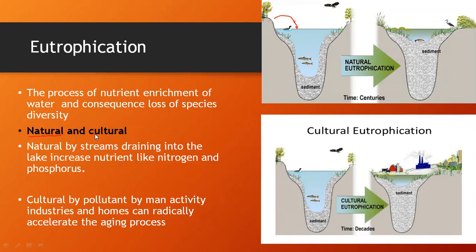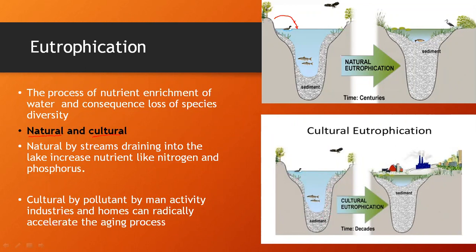Whereas in cultural eutrophication — remember this — the pollutant from human activity, industries, and homes radically accelerates the aging process. Imagine this pond is near your house. For a very long time this pond is there — from a young age you've been seeing it. There are fishes, there is a duck, everything is normal. But natural eutrophication must have been taking place here as well — by the rainwater, river water, some fertilizers have come and sedimentation has taken place.